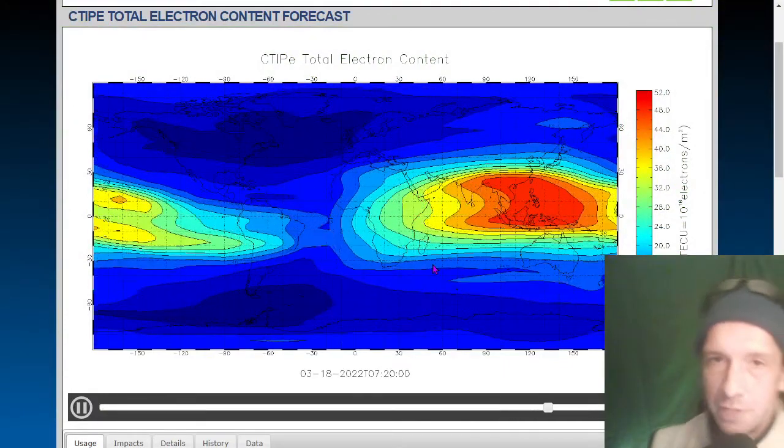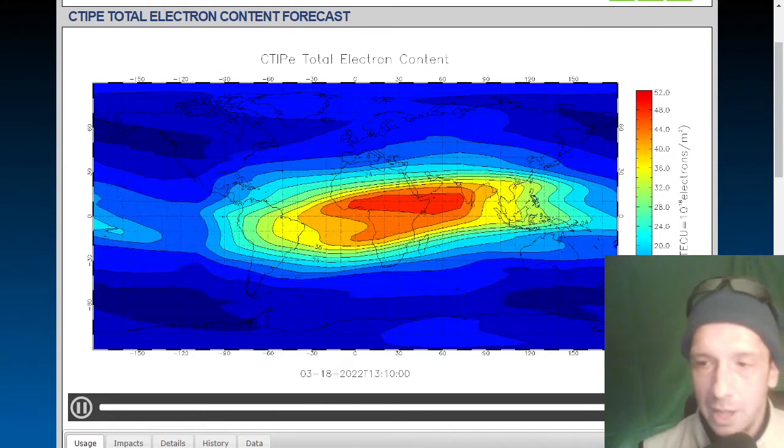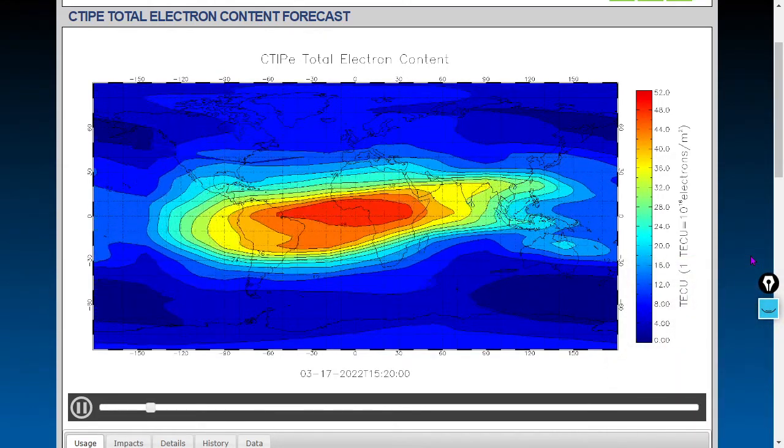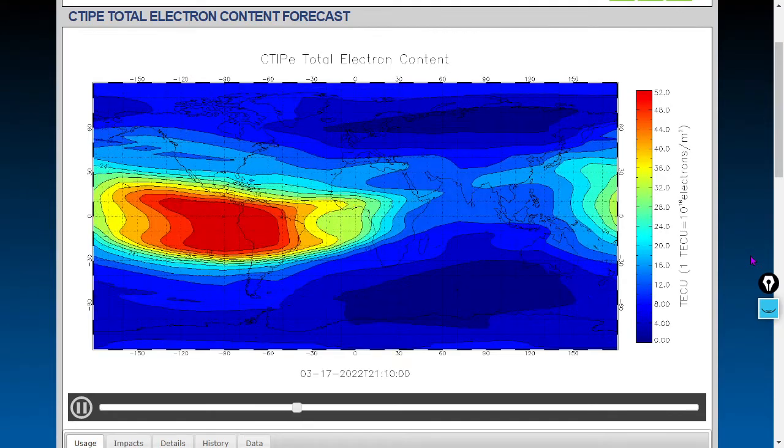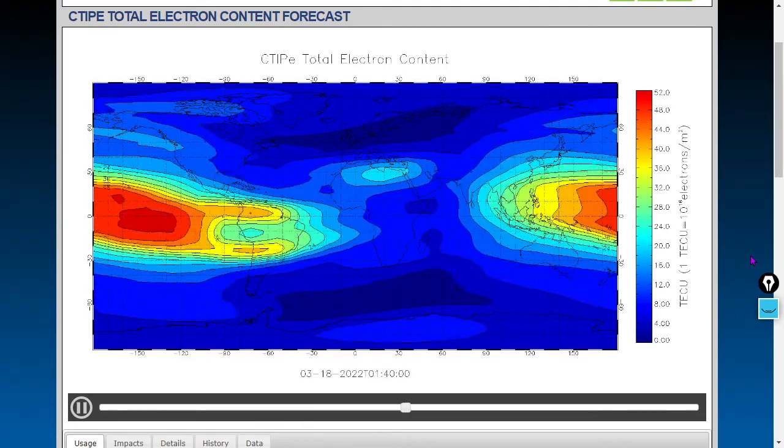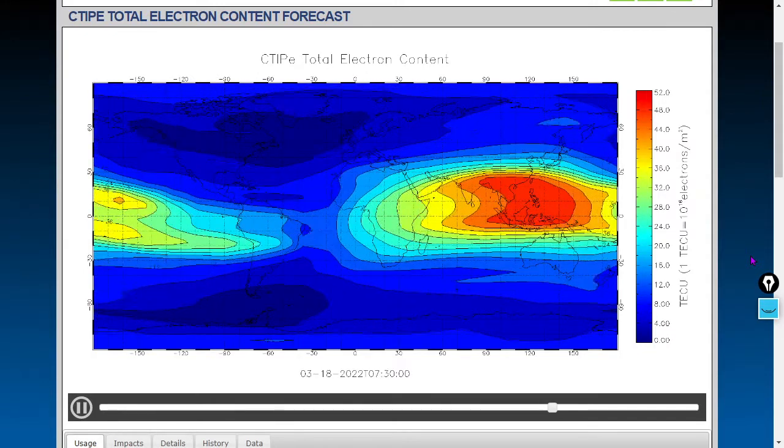Welcome everybody to our bonus features segment. First thing we're looking at are GPS errors with the total electron content forecast, the CTIPE - the Coupled Thermosphere Ionosphere Plasmasphere Electrodynamics. Total electron content refers to the electrons between your handset and your GPS satellite, which is located at about twelve and a half thousand miles of altitude, which can cause GPS errors.